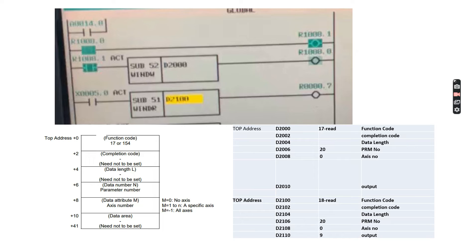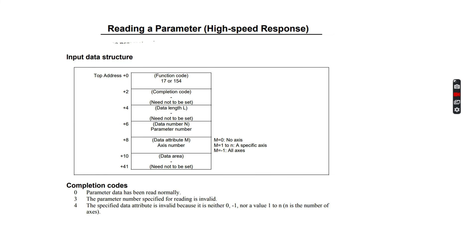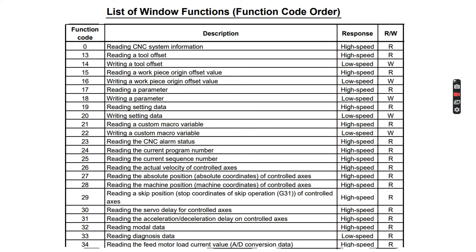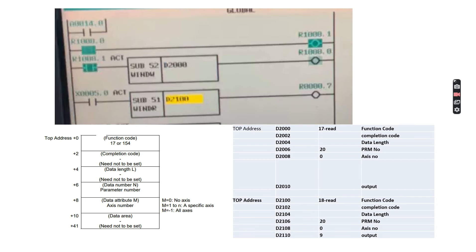Function code 18 is for writing a parameter. Same format is used — completion code is the same, data length same, no need to be set. The parameter number needs to be specified, data attribute not related to axis so it goes to 0. Suppose I want to put the value 9 into the parameter — I will put 9 in the data area. Whenever this input goes high, the value in that parameter will be written as 9.